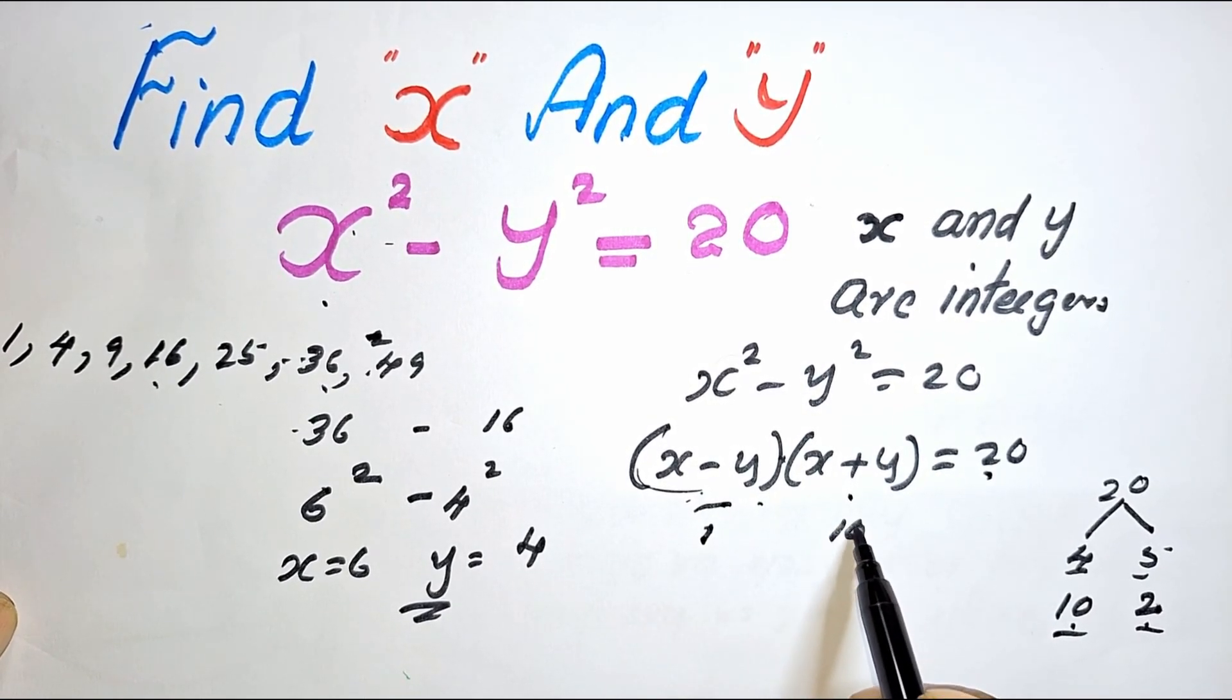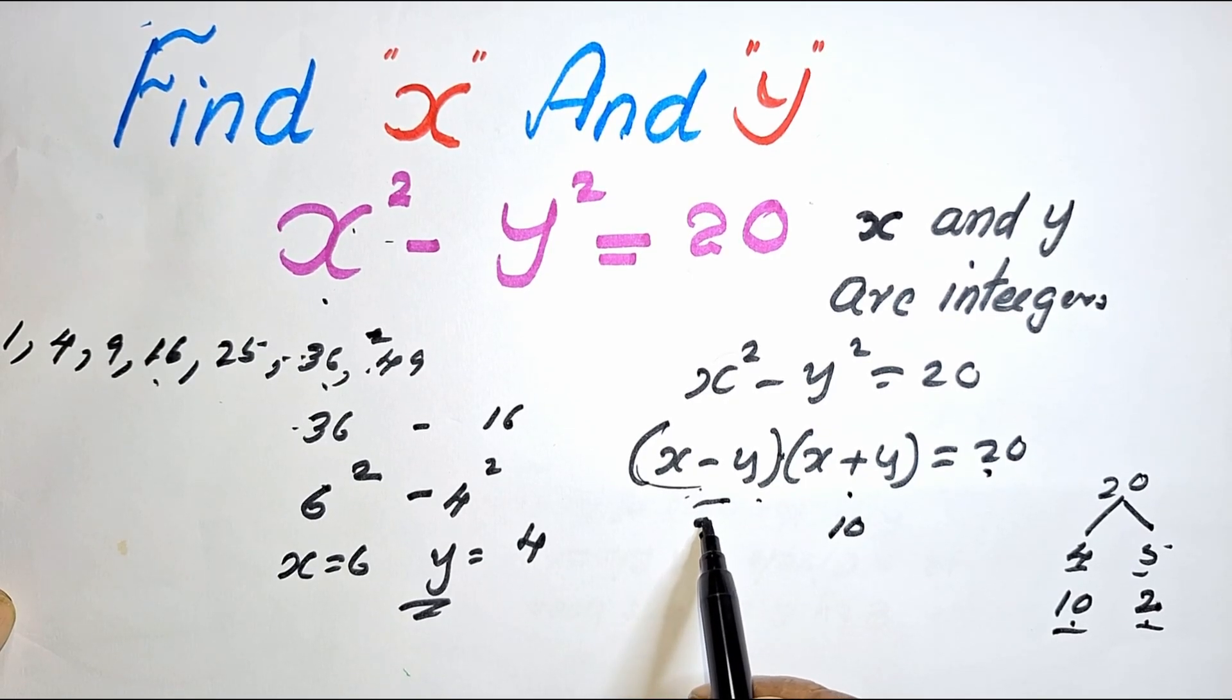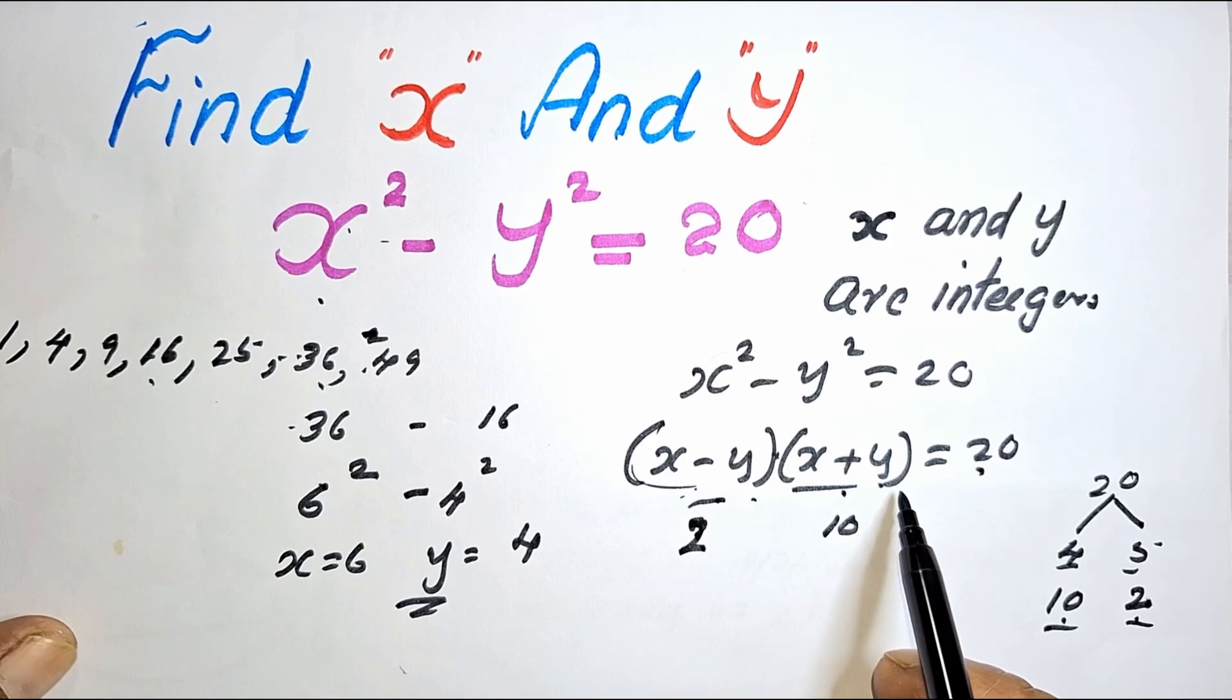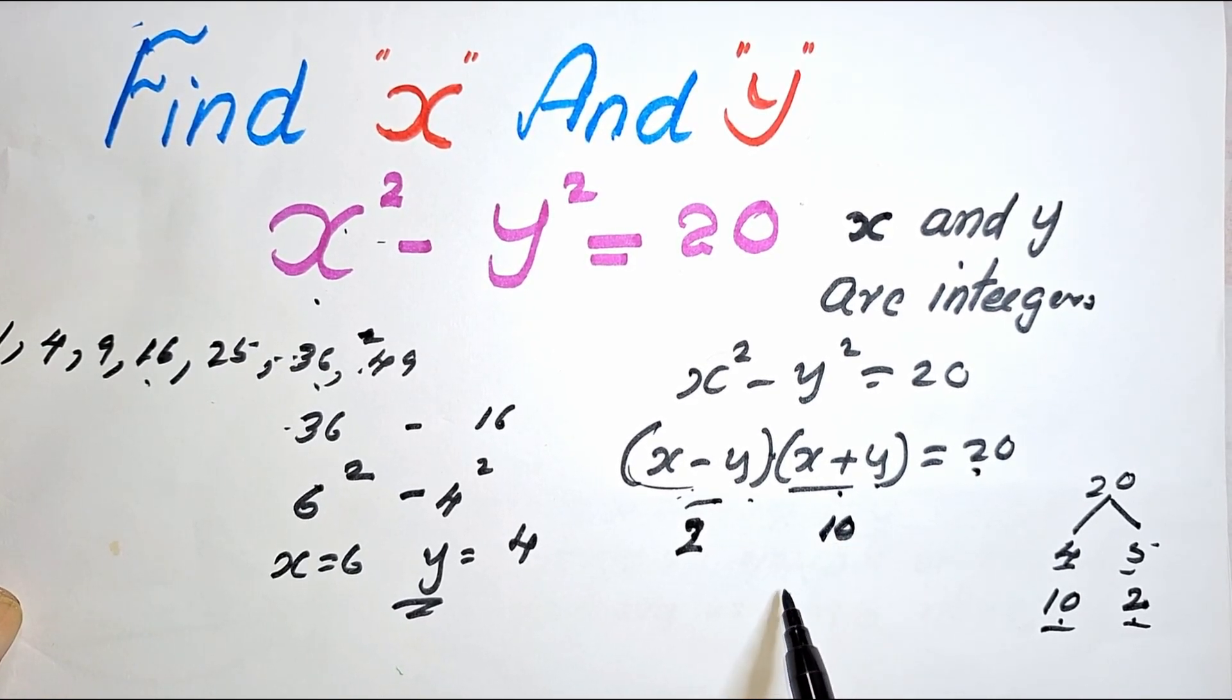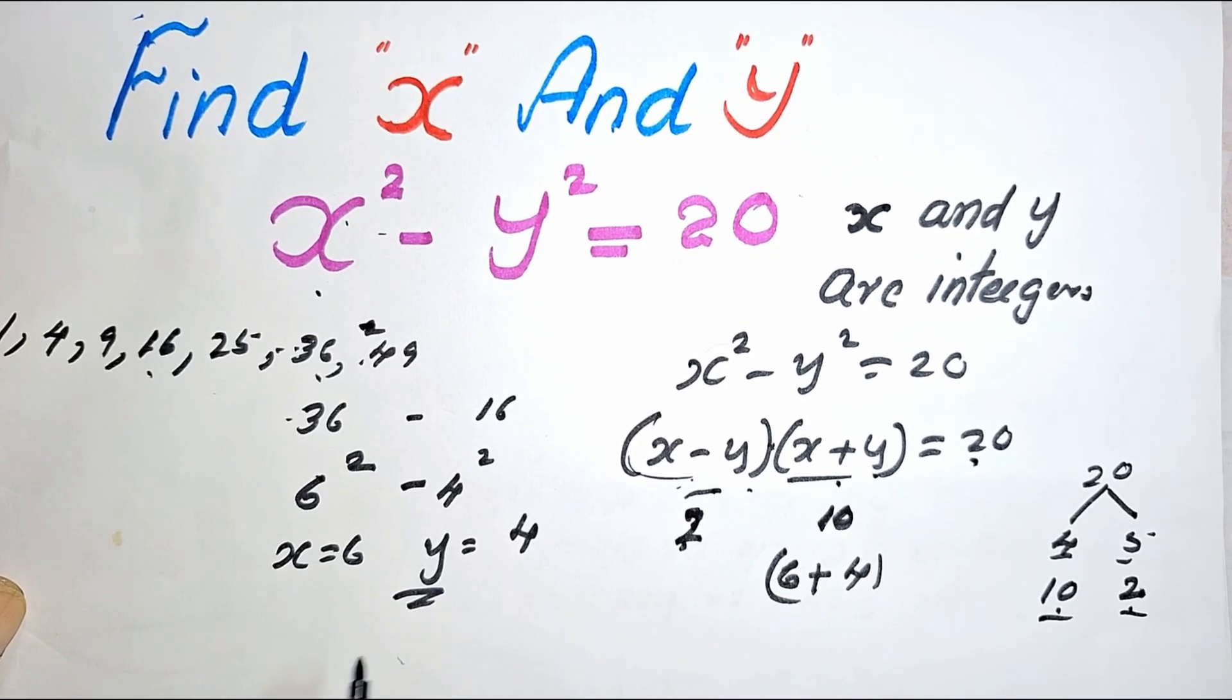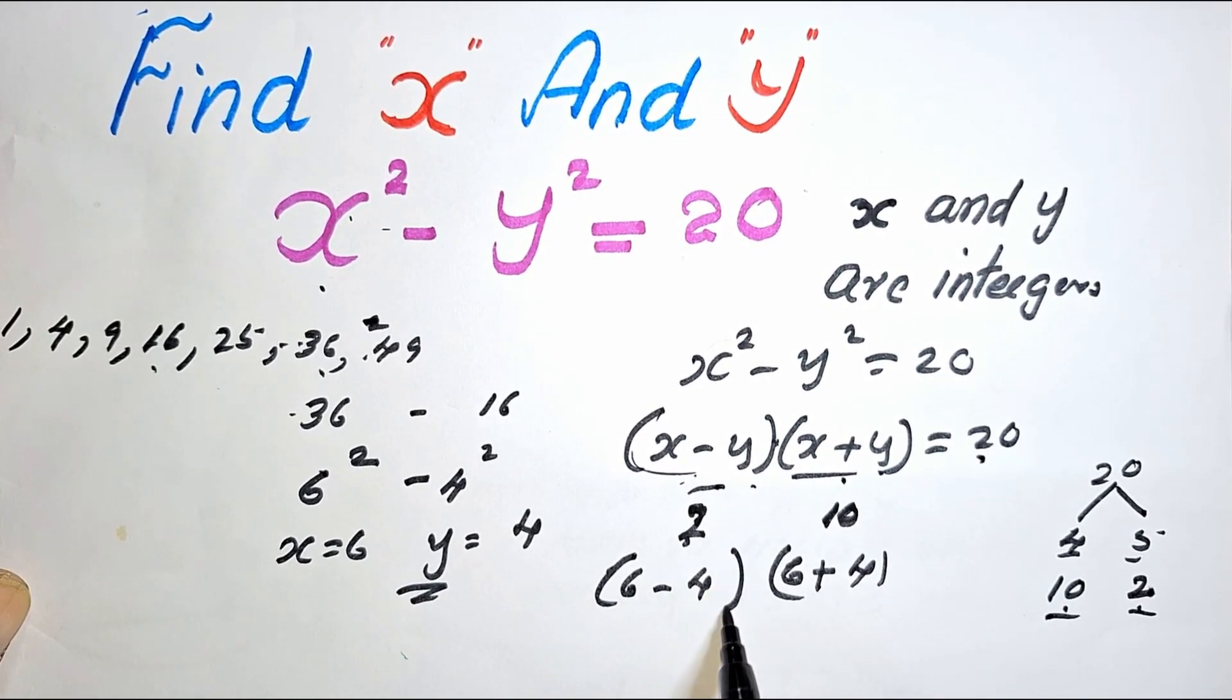We can take this as 10 and this as 2. Now, 10 we can write as 6 plus 4. This one we can write as 6 minus 4.